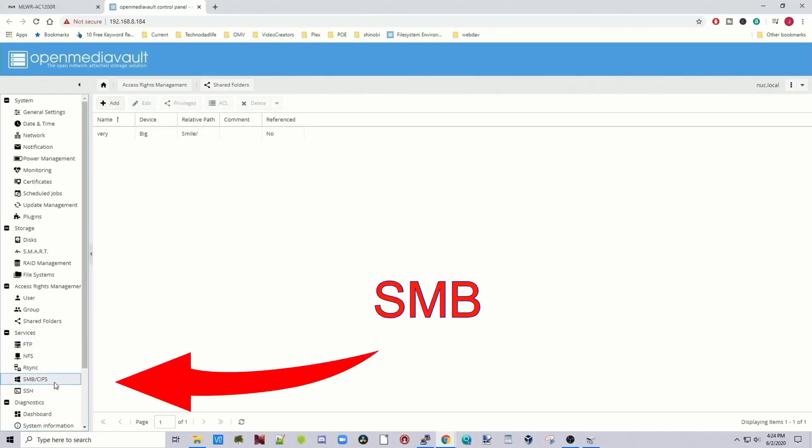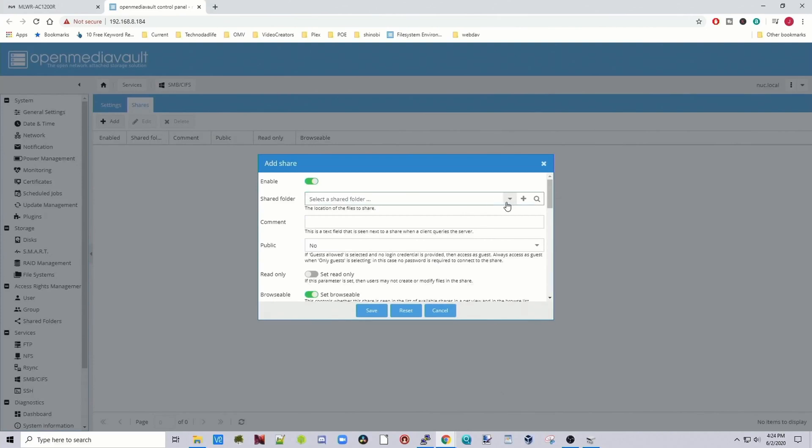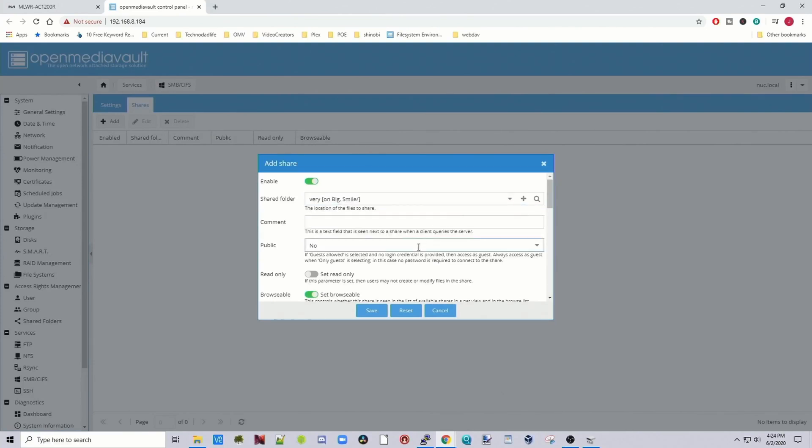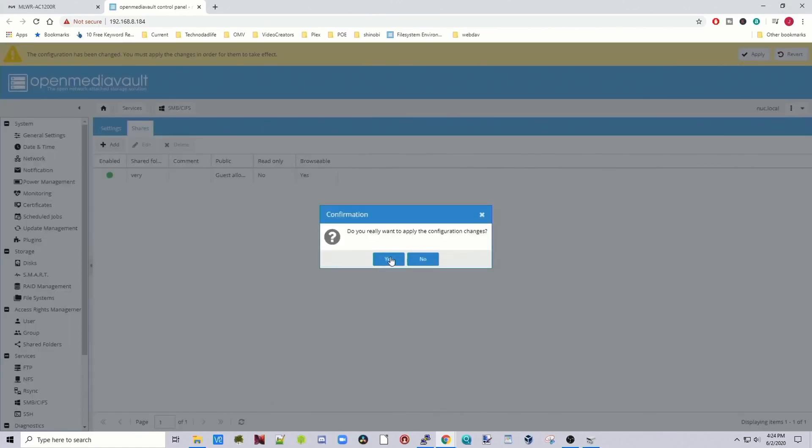So now our drive and our folders have been mounted. Let's re-enable them in Samba to see if our files are still there. We go down to SMB, click on Shares, Add, click on Smile, Allow Public, and Save. Then Apply and Yes.